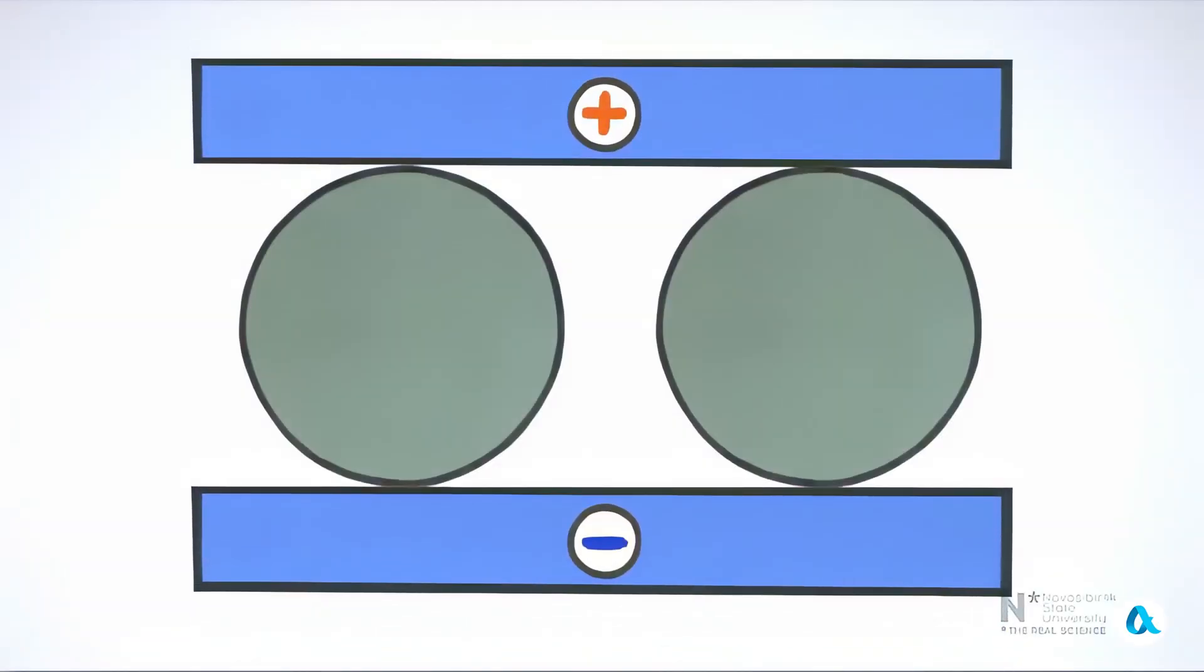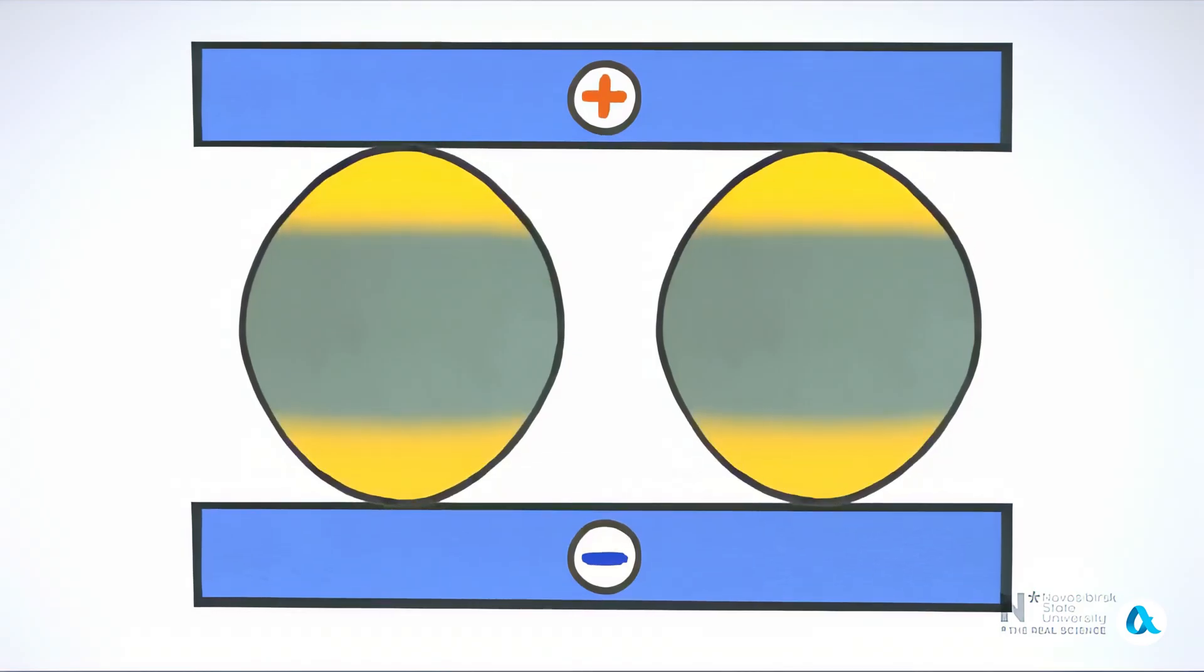The contact areas between the balls and the rings are very small, so the resistance of the circuit is determined precisely by these areas. When electric current flows through the balls, almost all the heat is generated in the contact zones and they heat up significantly. The metal in these areas expands. The balls change from round to slightly elongated and become a bit wedged in place.